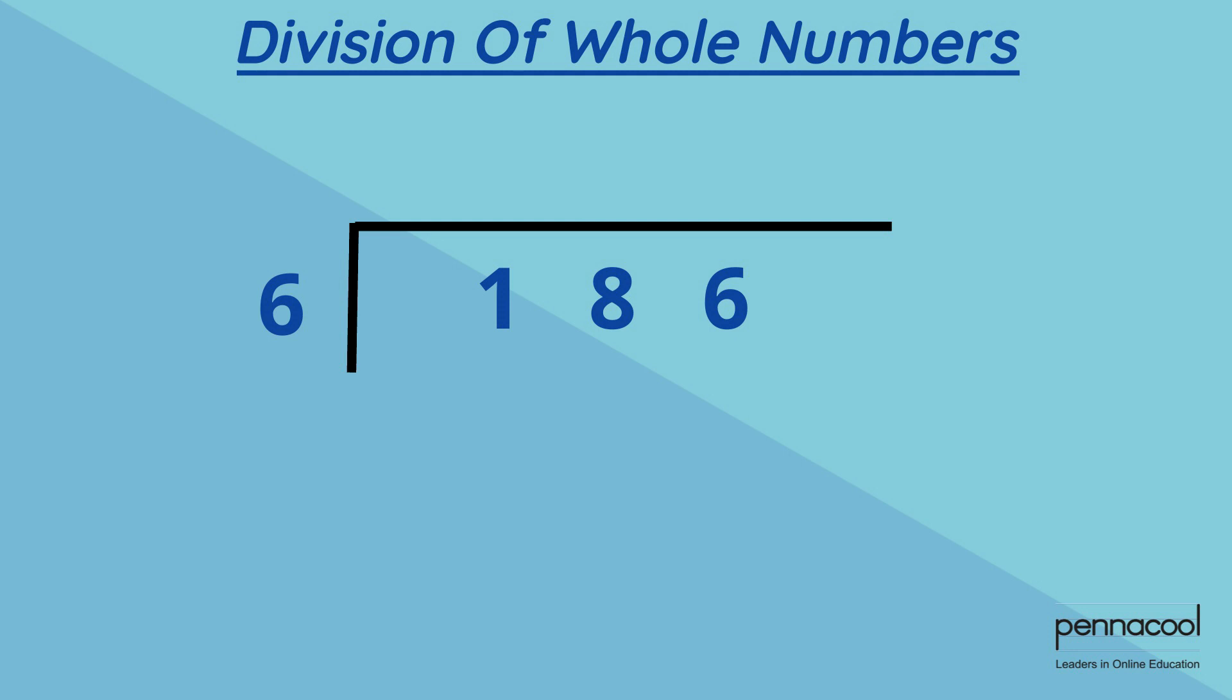6 can't go into 1, so a 0 is placed at the top in the answer space. The 1 is carried over to the next number, which makes it 18. It is now 18 divided by 6. There are 3 groups of 6 in 18 with no remainders. 3 is placed at the top in the answer space.